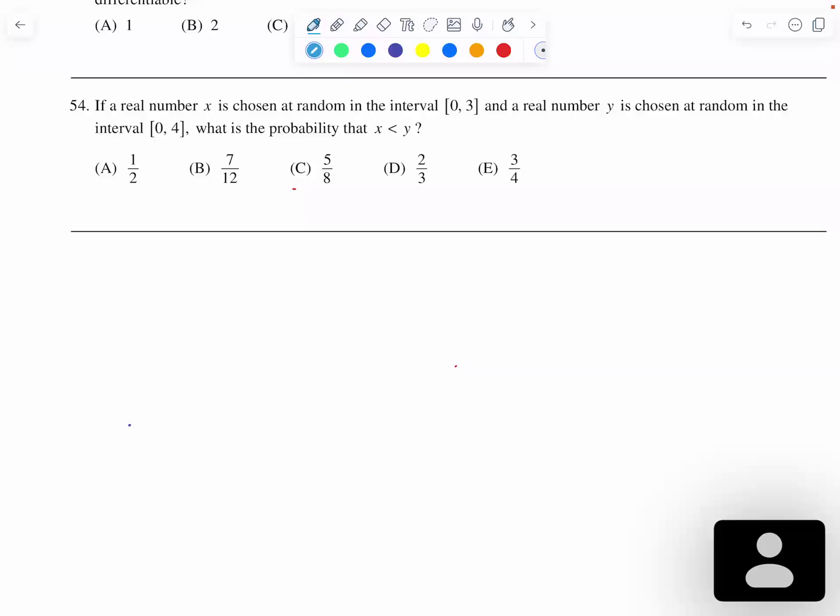They say if the real number X is chosen at random in the interval [0,3], and a real number Y is chosen at random in the interval [0,4], what is the probability that X is less than Y, or Y is greater than X?